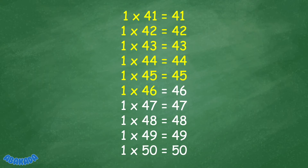1 times 46 equals 46. 1 times 47 equals 47. 1 times 48 equals 48. 1 times 49 equals 49.